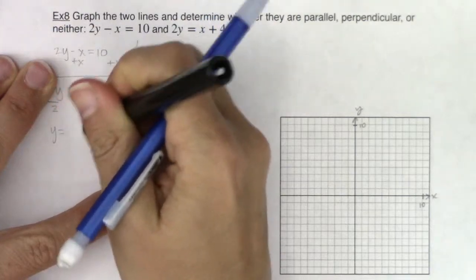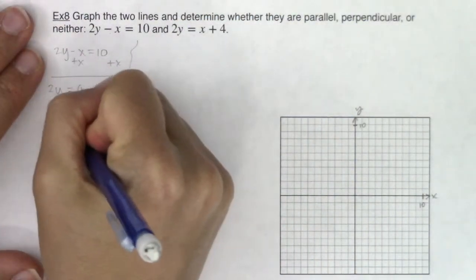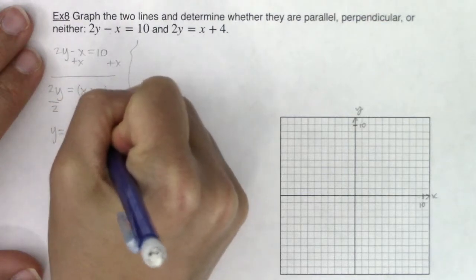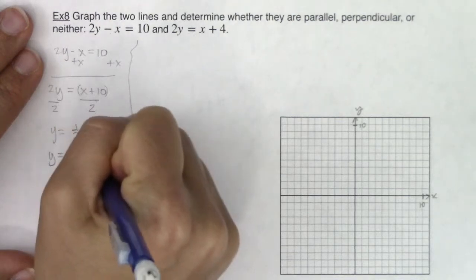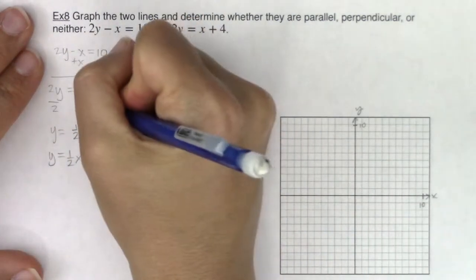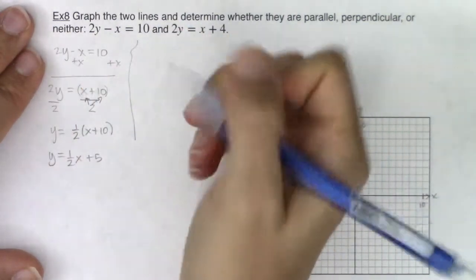So when you think about another way of writing this, let me erase this. This would be saying I am going to multiply 1 half into the binomial x plus 10. Or really this is 1 half x plus 5.